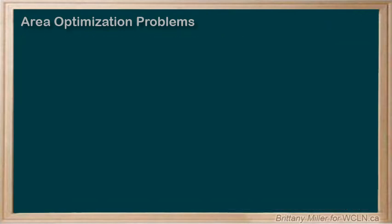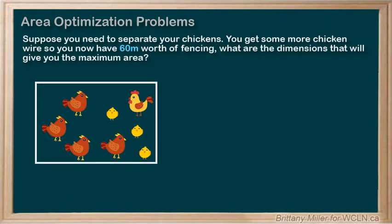Let's try another one. Suppose your chicken pen from the first problem isn't quite working out. Your chickens have divided into two factions and are fighting each other, so you need to separate them. You get 10 more meters of chicken wire for a total of 60 meters, and you want to recreate your pen so that it looks like this. We still want to find the length and the width, so let's label them with x and y again. But the constraint is different now, because you have two lengths and three widths.